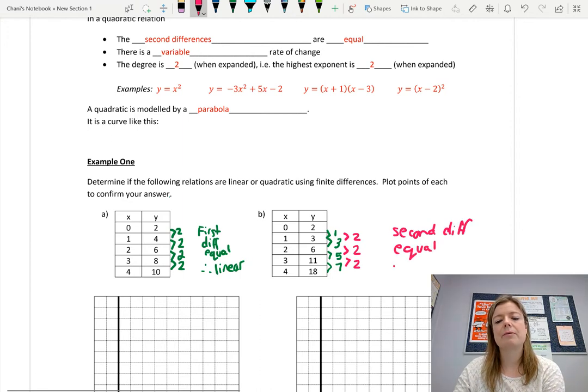Therefore, we can see that the second differences are equal. So that means that we're looking at a quadratic. Now, if neither first nor second differences are equal, then it's neither linear nor quadratic. This means there's a variable rate of change. So y is going up by 1, then it's going up by 3, then it's going up by 5. The rate of change is not constant.